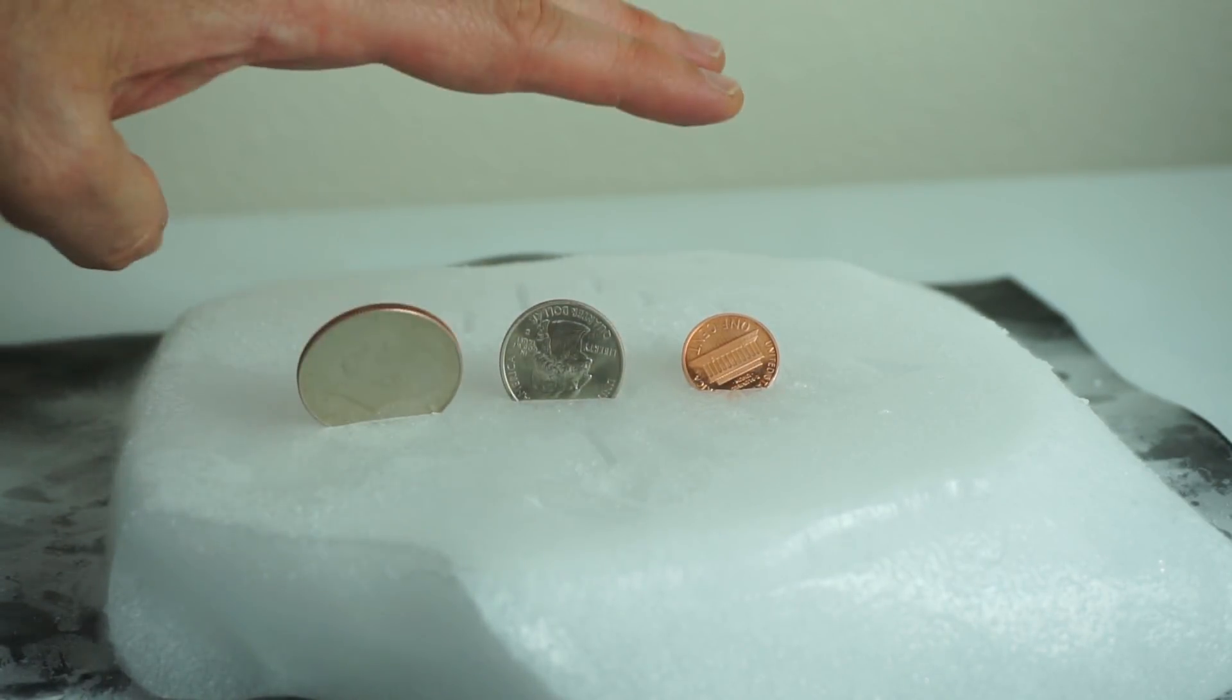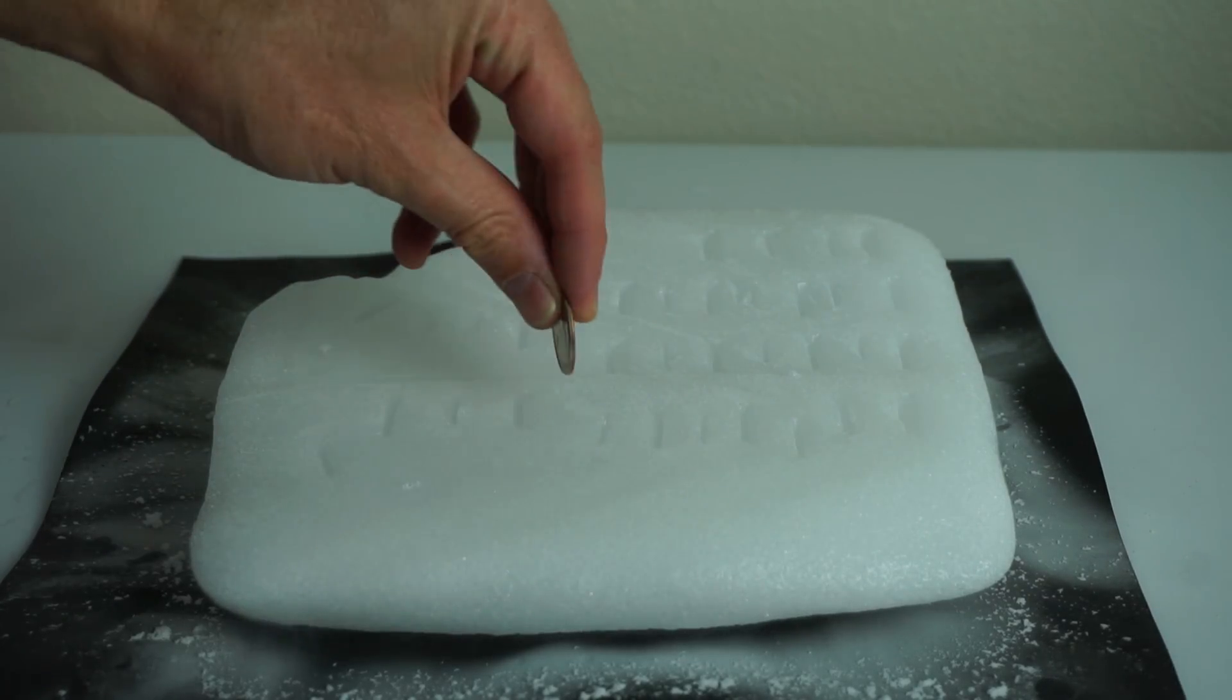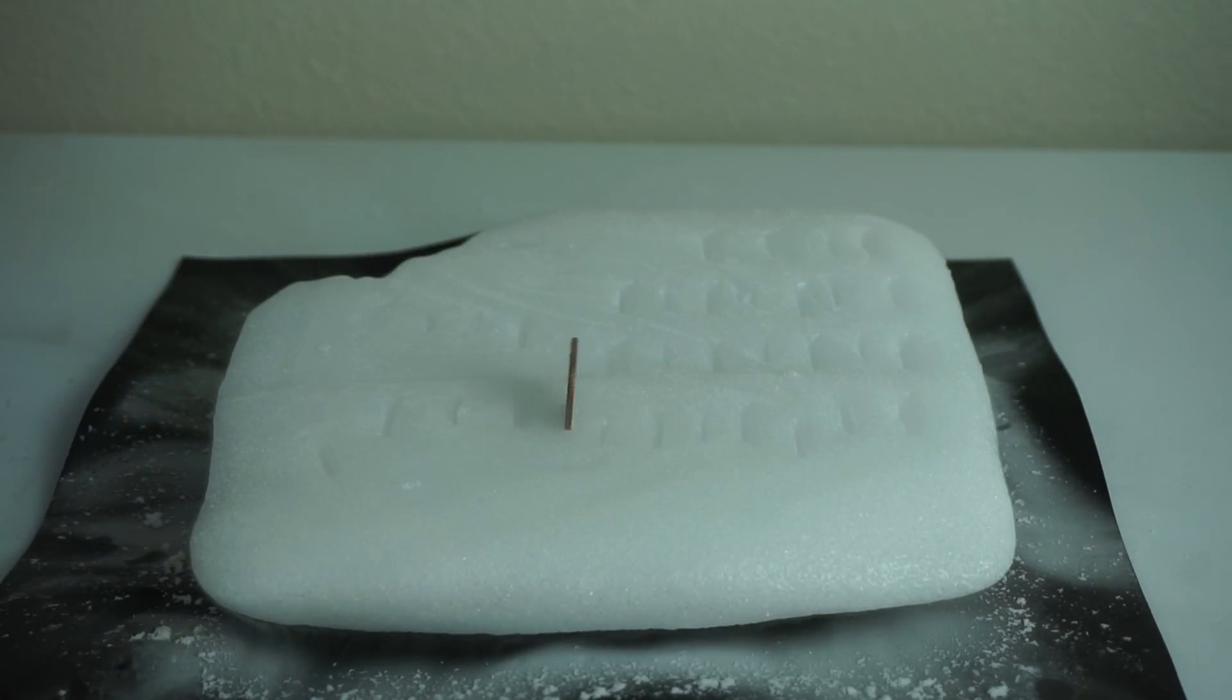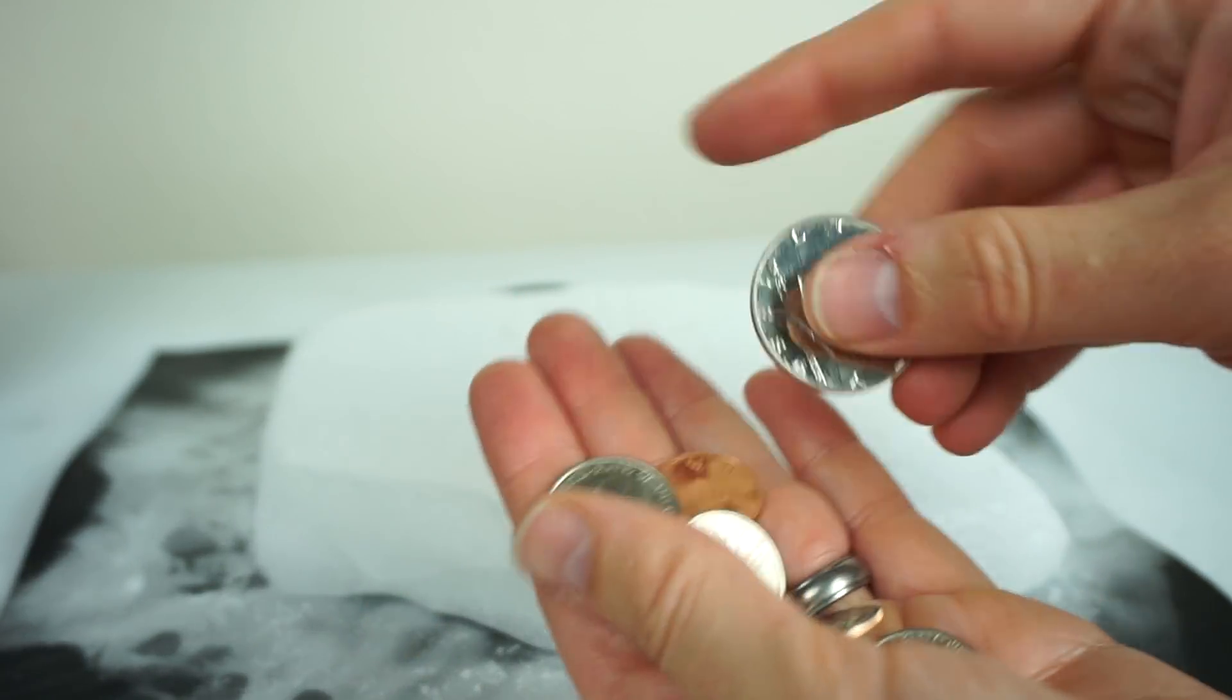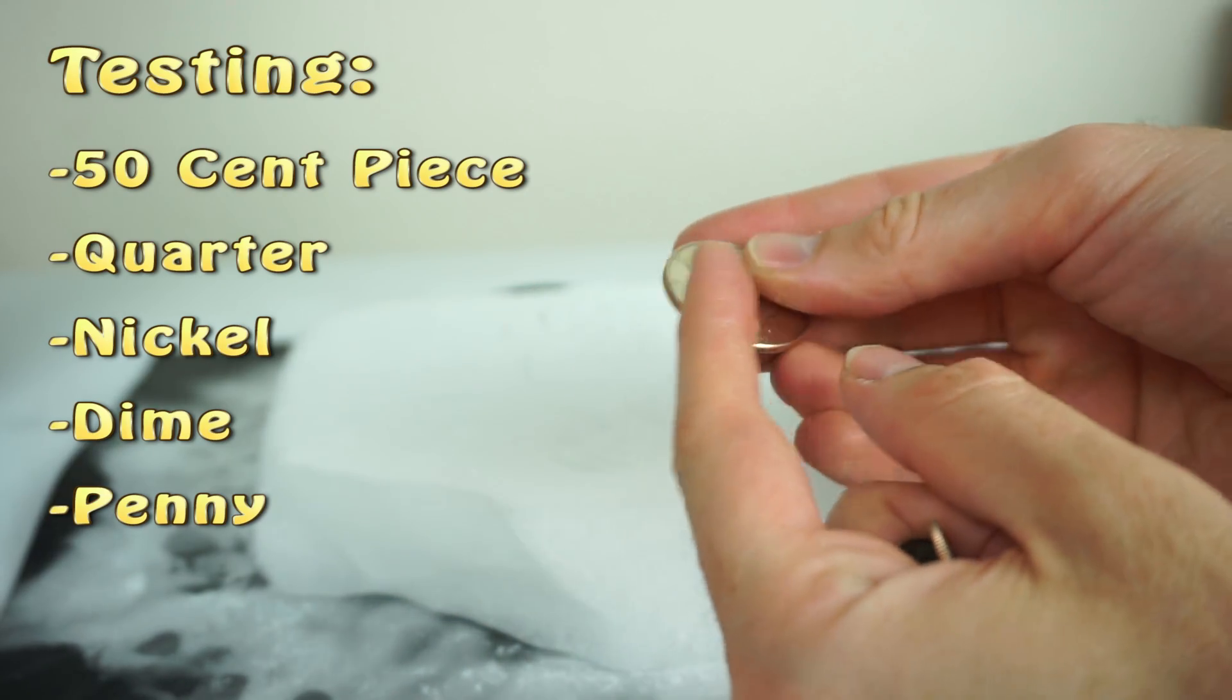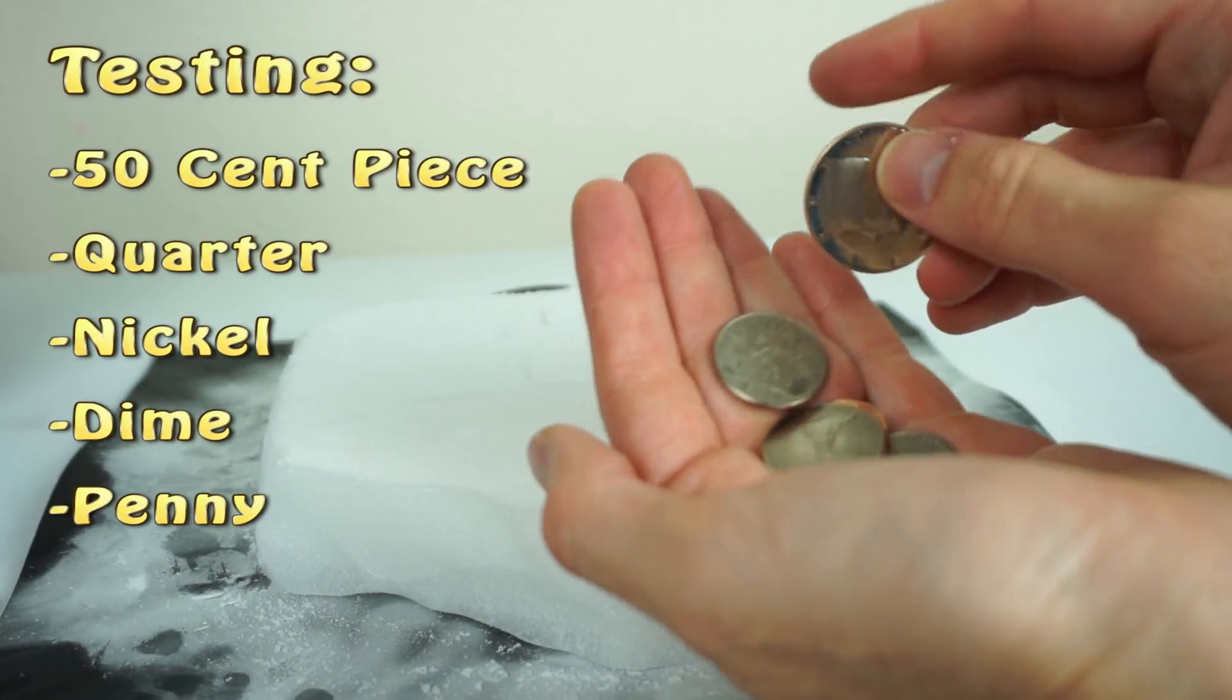Okay, today I'm going to be testing which coins flap the best on dry ice. What you do is you stick a coin in dry ice and it starts wiggling back and forth. So what I want to test today is what type of coins do the best. Do bigger coins do the best or smaller coins? Do they need the grips on the side? If you want to try this at home, let's see what coins are the best for flapping on dry ice.